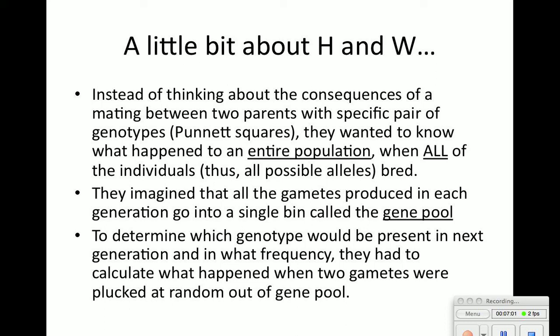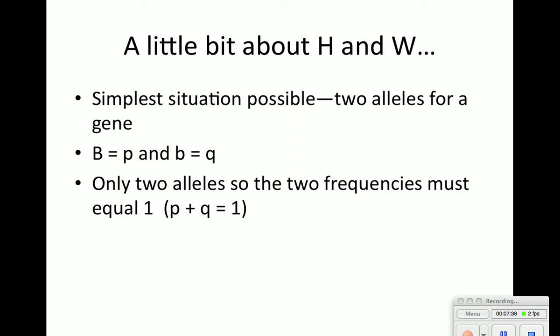Instead of thinking about consequences of mating between two parents with specific genotypes like with Punnett squares, Hardy and Weinberg wanted to know what would happen to the entire population when all individuals breed. They imagined all gametes produced in each generation go into a single bin called the gene pool. To determine which genotypes would be present in the next generation, they calculated what happened when two gametes were picked at random from the gene pool. In this equation, P stands for the dominant allele and Q for the recessive allele. The two frequencies must equal one: P + Q = 1.